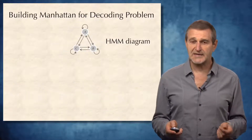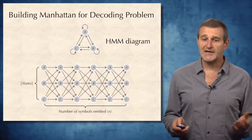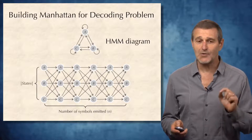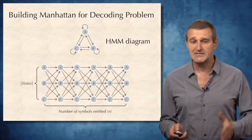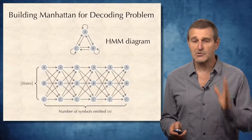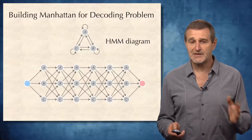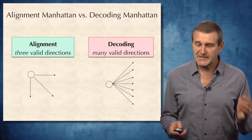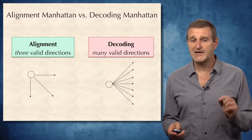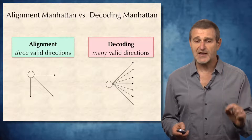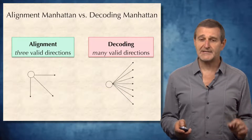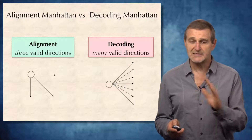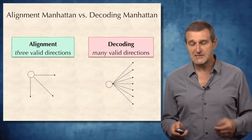For a slightly more complex HMM consisting of three states, our Manhattan will be built of three rows and N columns. Generally, if we have an HMM with K states, there will be K rows in this Manhattan. As before, we will add start and end states. Note that in difference from the alignment Manhattan, when we had just three directions from every node, in the decoding Manhattan we have many directions — anything that goes to the east works in this newly built Manhattan.